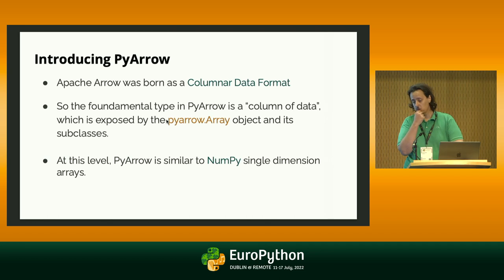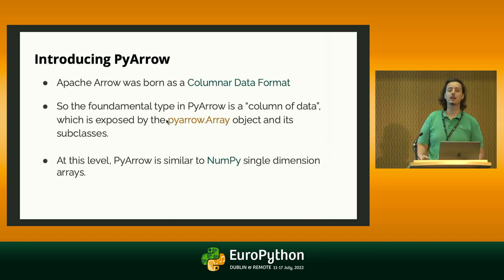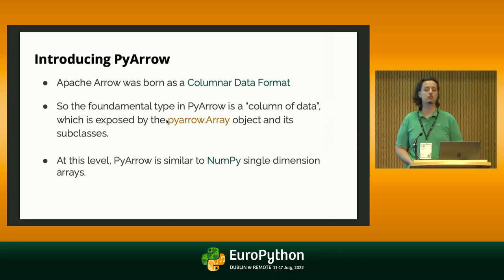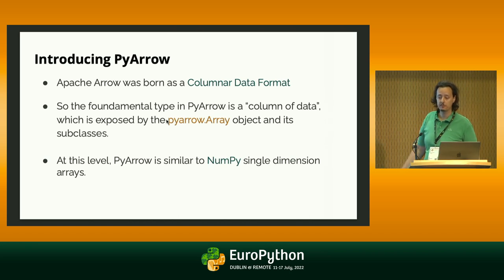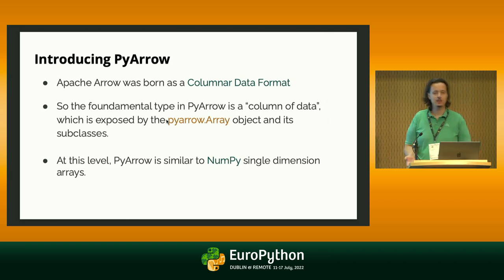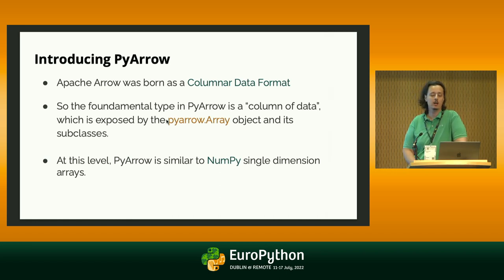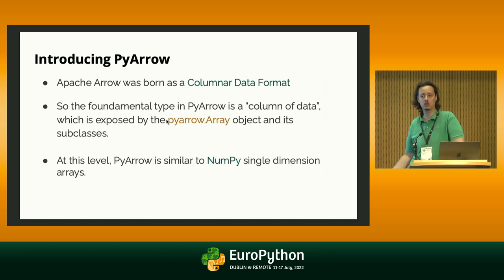Originally, Arrow was born as a columnar data format, so the fundamental entity in Arrow is a column of data, which is exposed by the array class in most bindings. Specifically for PyArrow, it's the PyArrow Array object. If you've ever used NumPy, PyArrow at this level is not much different from a single-dimension NumPy array. In fact, it's possible to convert a PyArrow array to a NumPy array and vice versa without incurring any additional cost of conversion.